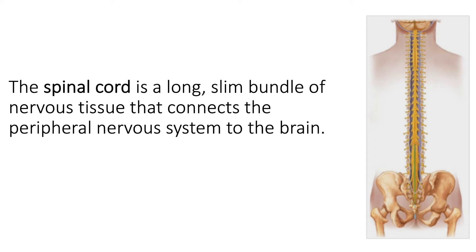The spinal cord is a bundle of nervous tissue that passes through the vertebral cavity. When the vertebrae are stacked on top of one another, those vertebral foramen of each vertebra align to create that vertebral cavity, and it's through that space that the spinal cord passes. All of the spinal nerves connect to and from the spinal cord, bringing sensory information in to the central nervous system and motor information out, both to and from the peripheral nervous system.